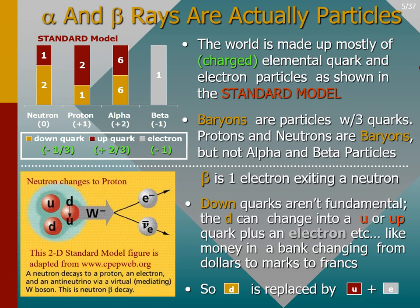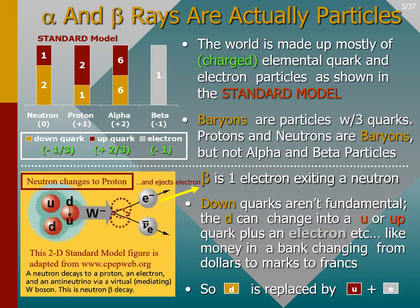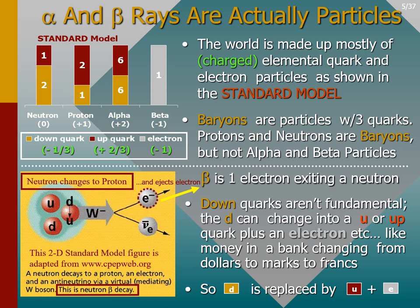A beta particle is a single electron exiting a neutron. As shown, a neutron decays into a proton, an electron, and other lesser known particles. This radioactive process is called neutron-beta decay. Later on, when we talk about atoms, we'll often refer to an electron ejected from a neutron as a quark electron — a reminder that this electron's location is in the nucleus, not in the orbital shells of the atom.